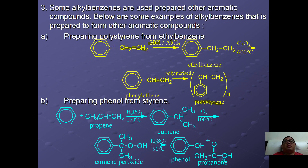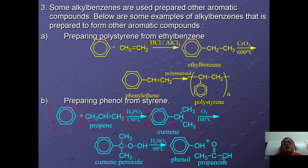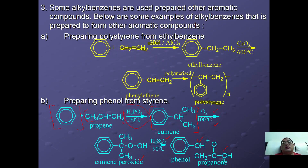Another important process is the cumene process, which can synthesize phenol and acetone simultaneously. First, benzene reacts with propene using H3PO4 as catalyst at 170°C to form cumene, where the propyl group is attached to the middle carbon. This is followed by oxidation at 100°C to form cumene peroxide, which then undergoes hydrolysis to yield phenol and acetone. Both products are especially important: phenol is used to synthesize pharmaceutical products and acetone is a widely used organic solvent.